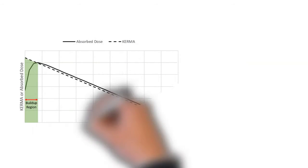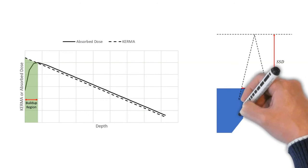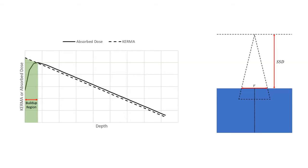Here's an example of that buildup region I was talking about. On the left you can see the absorbed dose plotted against depth along with the kinetic energy released per unit mass or KERMA. On the right you can see the geometry that we're plotting, so we're taking measurements at some fixed SSD with some fixed field size at the surface, and what we're actually plotting here is the absorbed dose along that dash line that's splitting the phantom there.